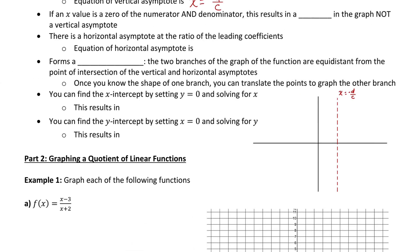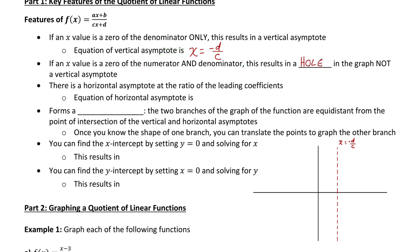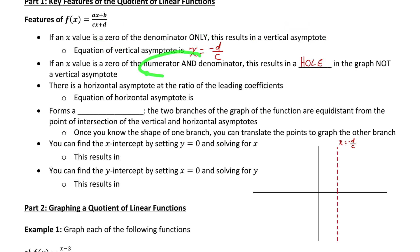I should also mention that there's only a vertical asymptote if the x value is a zero of the denominator only. If it makes both the numerator and denominator be zero, there wouldn't be a vertical asymptote — there would actually be a hole in the graph at that x value. So if an x value makes only the denominator zero, it's a vertical asymptote. But if it makes both the numerator and denominator zero, it's a hole in the graph.